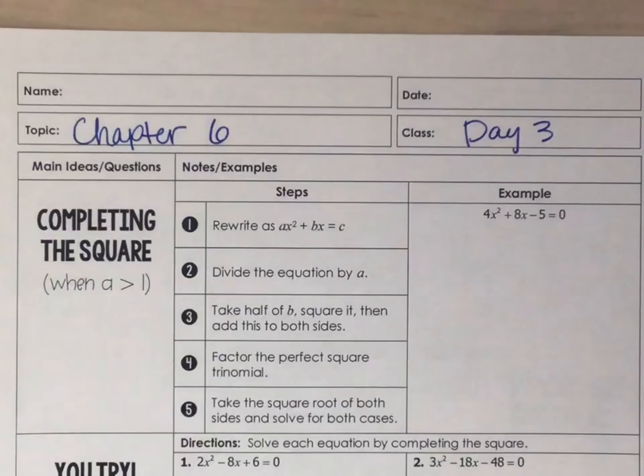So now what we would have to do is we'd have to find the factors of 200 that add up to give me 10. So multiply for a negative 200 and add to a positive 10. So that's 1 and 200, 2 and 100, not 3, 4 and 50, 5 and 40, 8 and 25, 10 and 20.